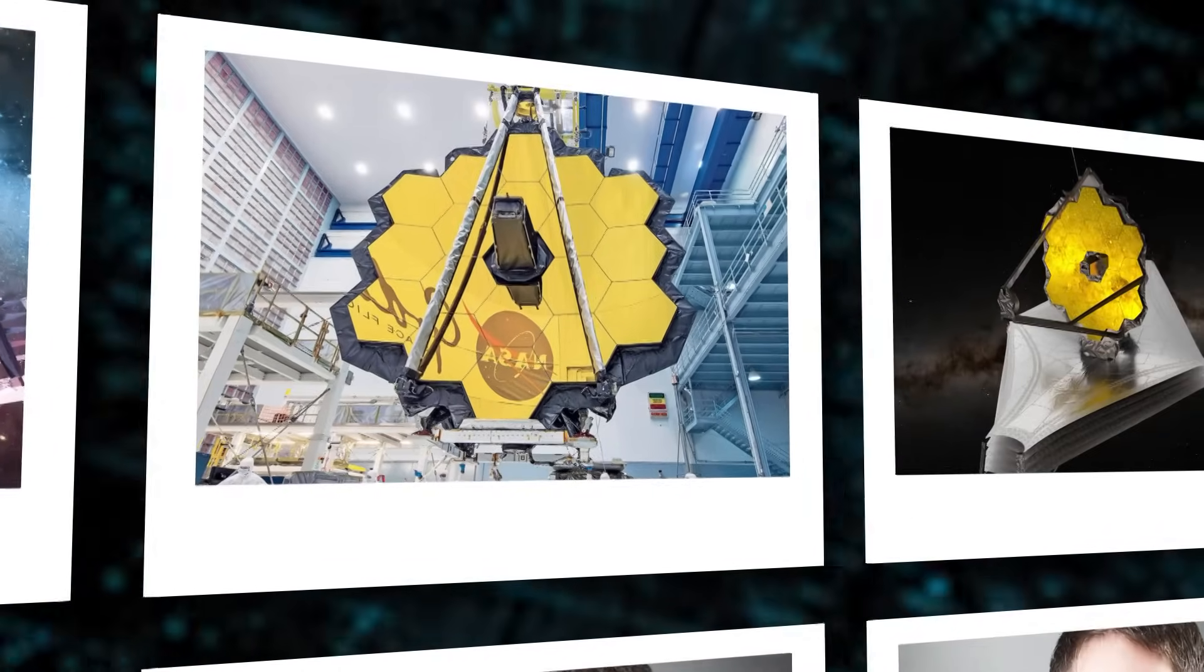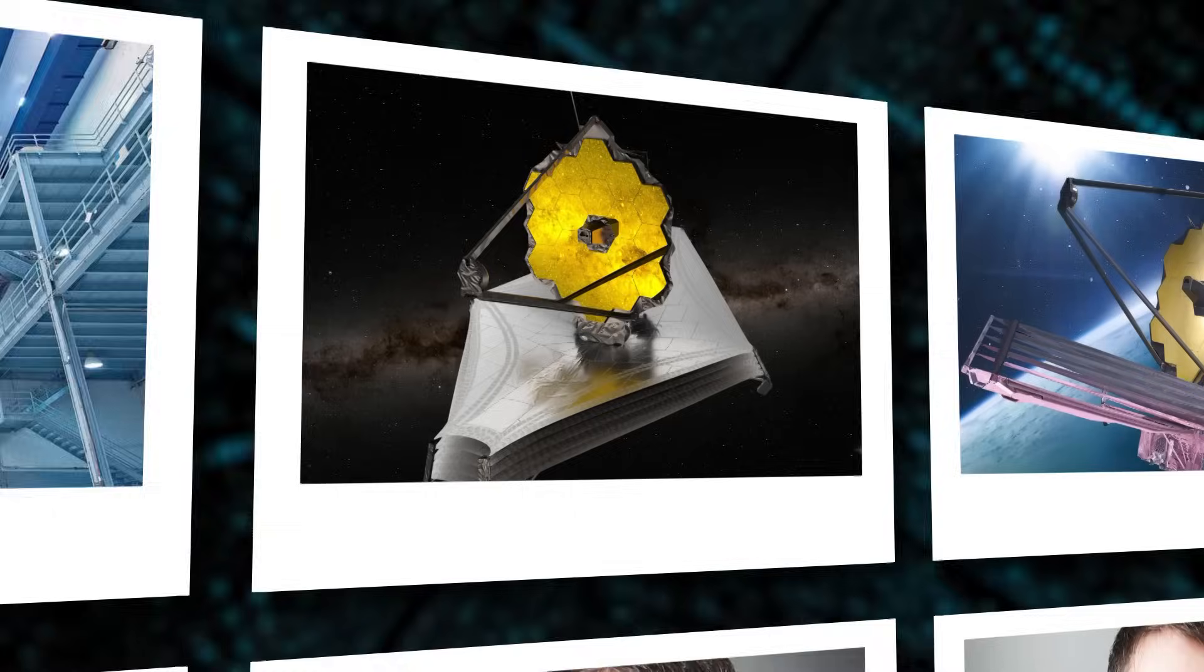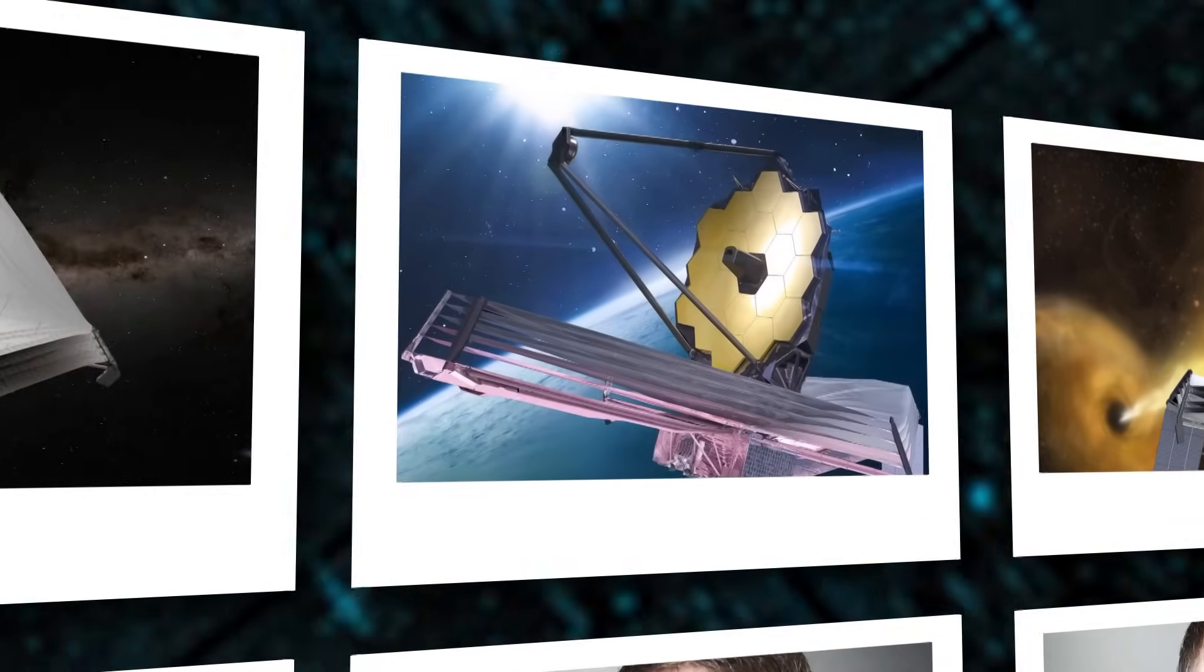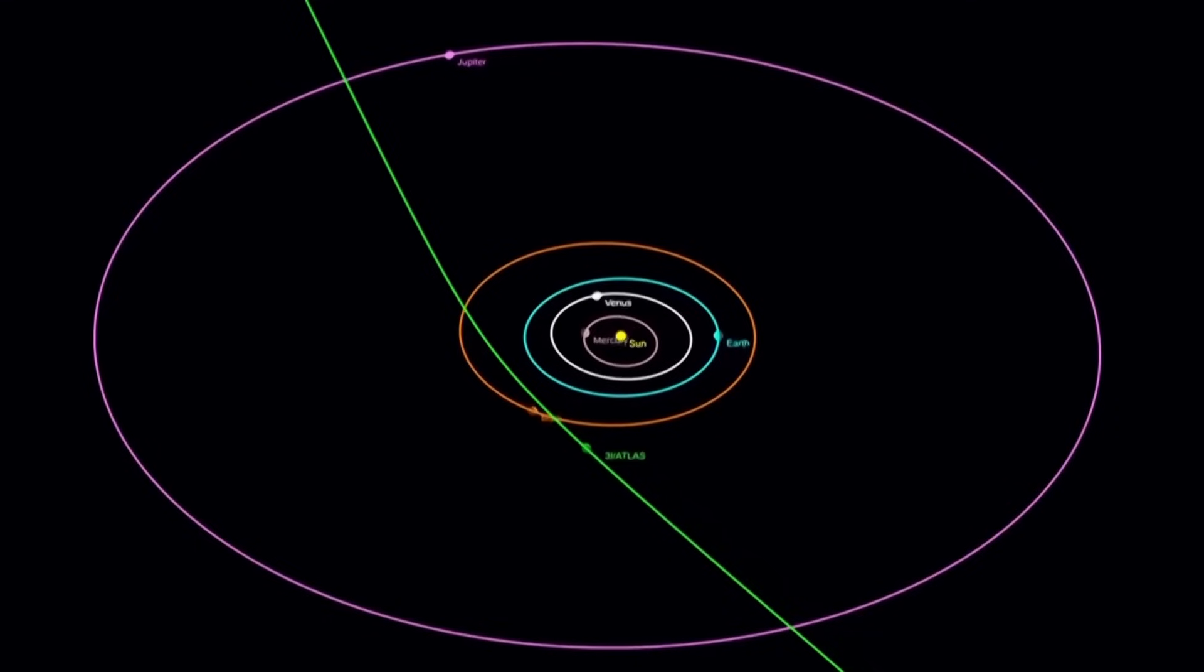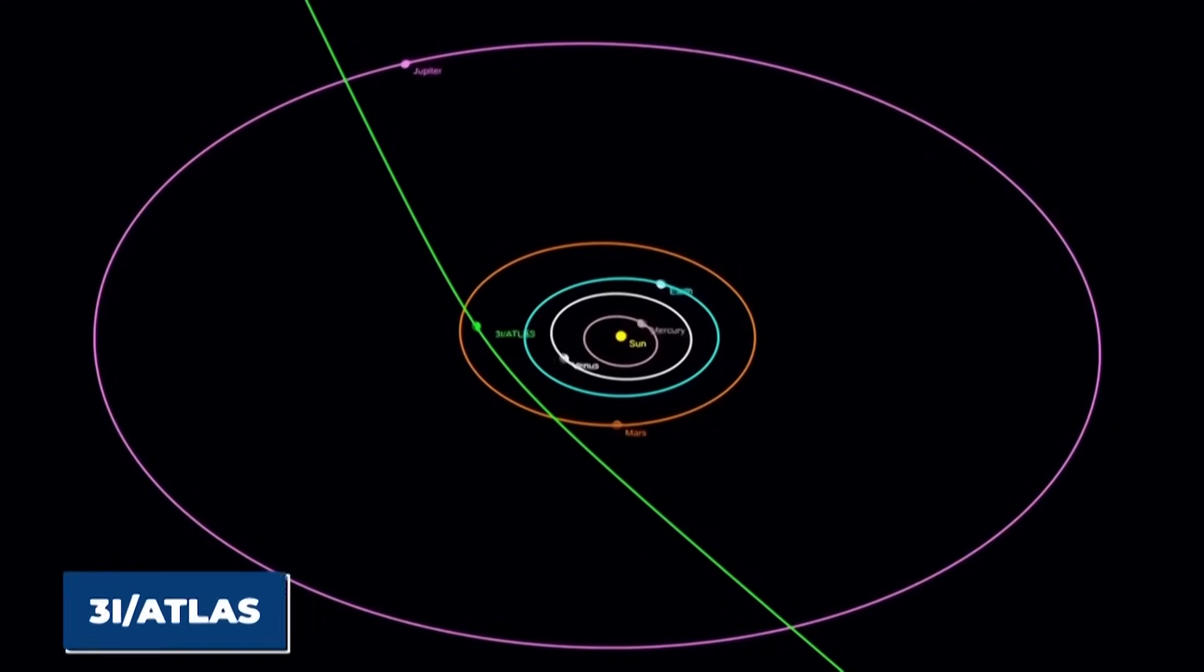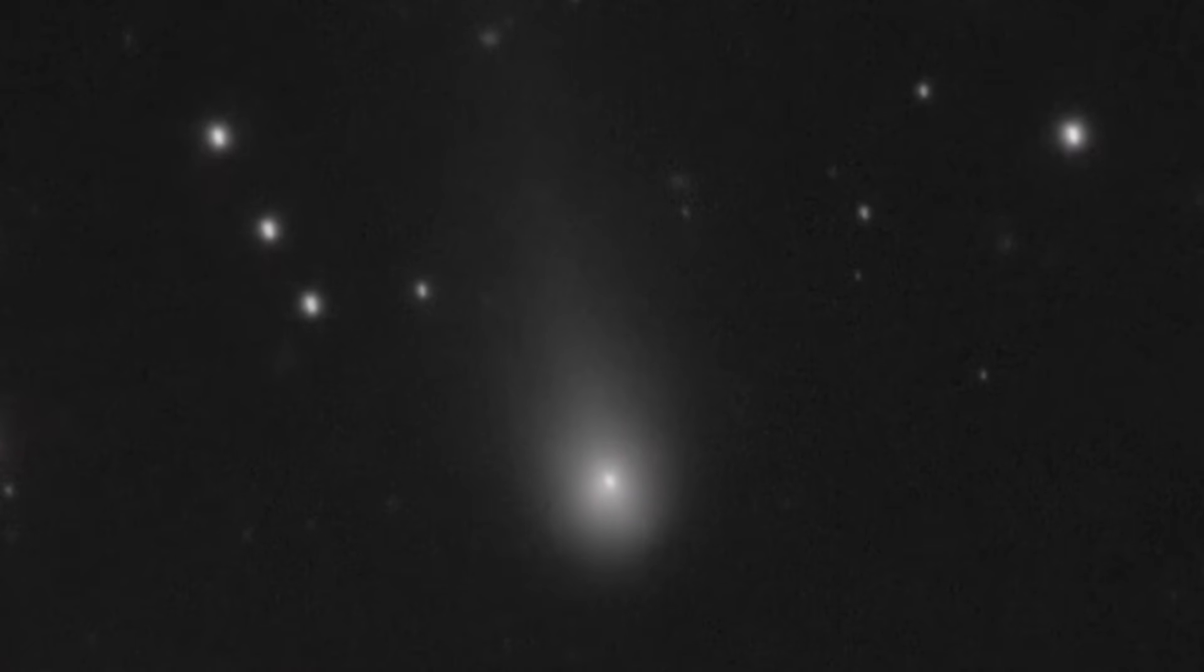The James Webb Space Telescope has once again shaken the scientific community. Its latest data, released in an emergency bulletin, suggests that the interstellar comet 3I-ATLAS is heading directly toward the red planet.